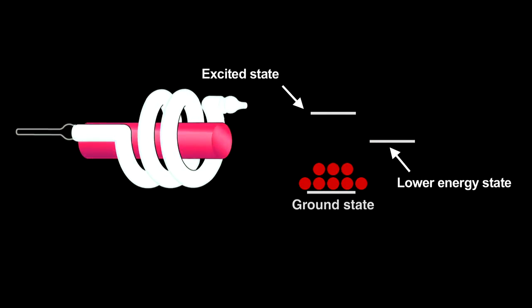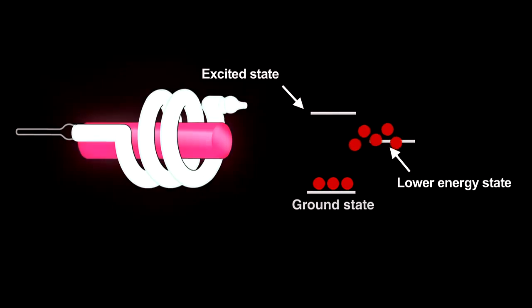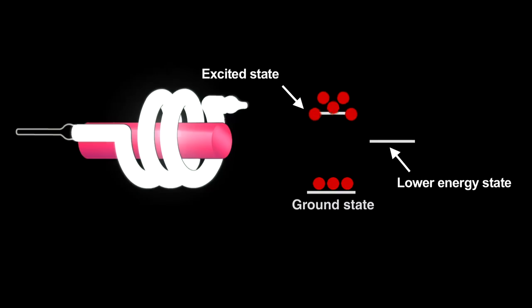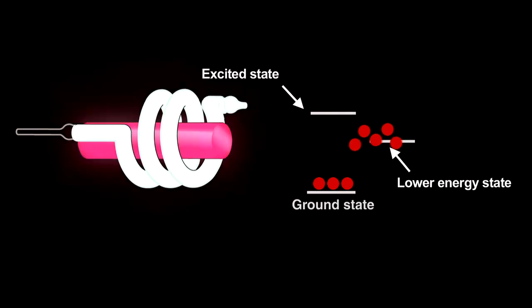To create a laser takes an extremely powerful lamp. In the ruby laser, repeated flashes, called pumping, make something amazing happen. They supply so much energy that a population inversion occurs. Here, more electrons in the energy level just above the ground state than in the ground state.